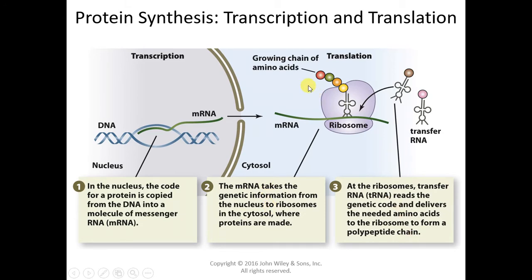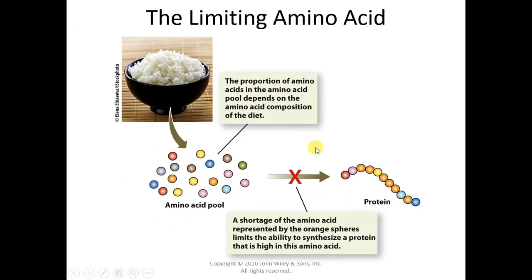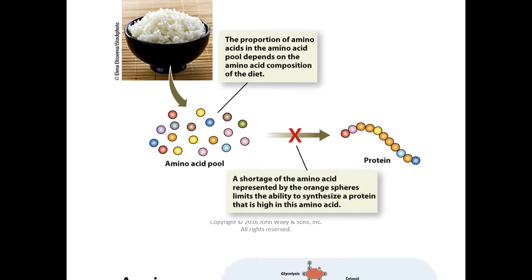It's important to understand that you pull from your amino acid pool to make your body's proteins. When an amino acid, because of an inadequate diet, is not available, then protein synthesis stops. That amino acid is called the limiting amino acid, and that can occur because of very unbalanced diets.